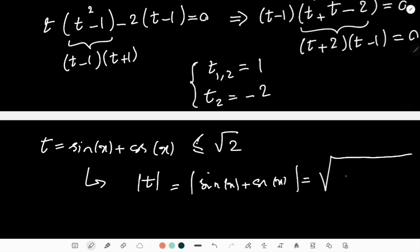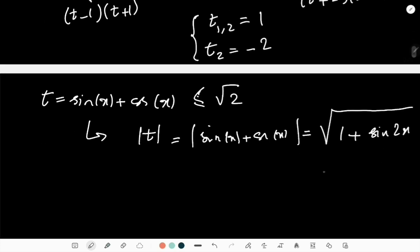And if you just simplify it, you get 1 + sin(2x). But sin(2x) is always less than 1. So obviously, this is less than always √2.